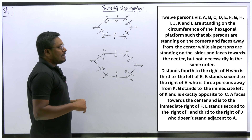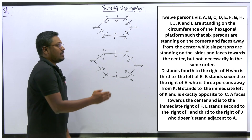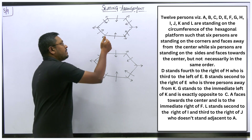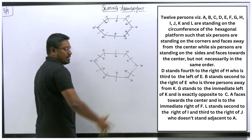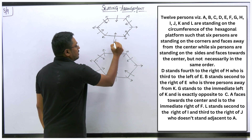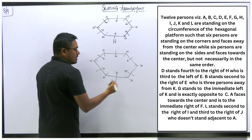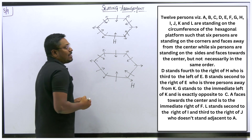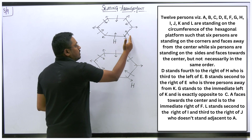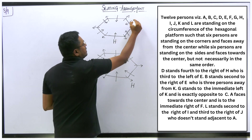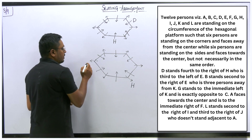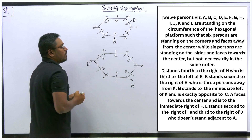First clue: D stands fourth to the right of H. We don't yet know whether H is facing the center or outside, so we set up two diagrams. In diagram 1, H is facing the center; in diagram 2, H is facing outside. In both cases, counting fourth to the right of H gives us the position of D.